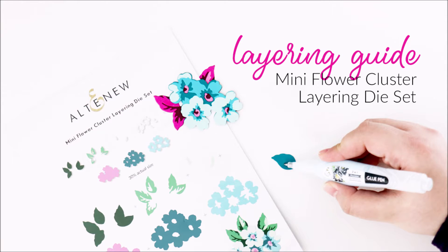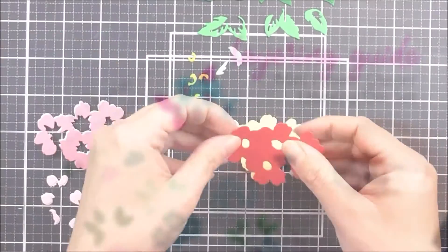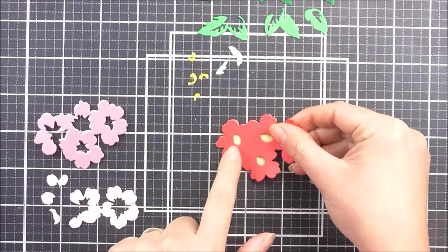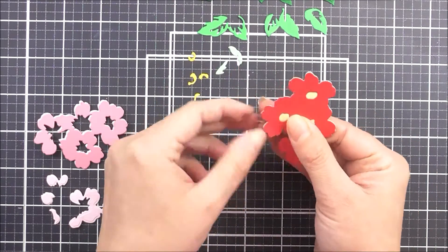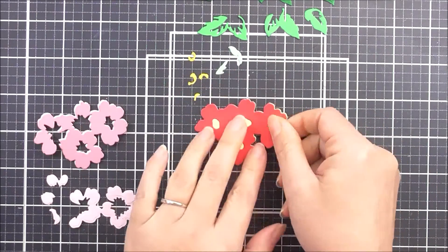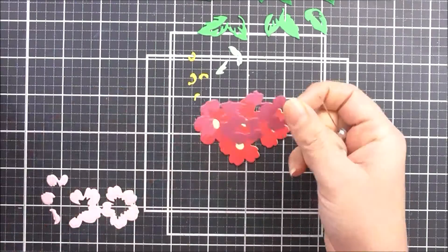Hello everyone and welcome to the Mini Flower Cluster Layering Die Set Layering Guide video. To start, I've cut all of my pieces. For the base, I used the buttercream cardstock. I've cut that for the base of the flowers and that's going to create the little flower center.